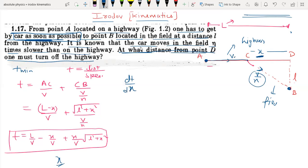So we can write, for T to be minimum, dT/dx equals 0. The first term is constant, so 0 minus 1 by V plus N by V - differentiating the root using chain rule - 1 upon 2 root times 2X.